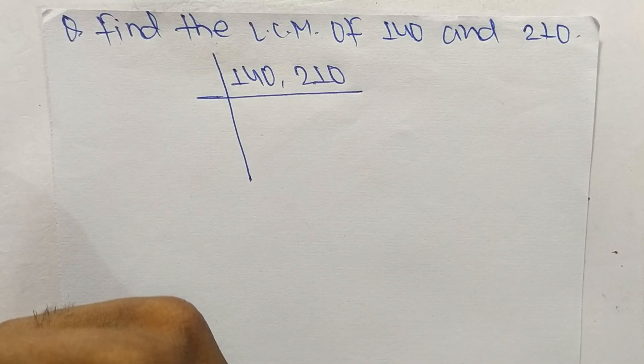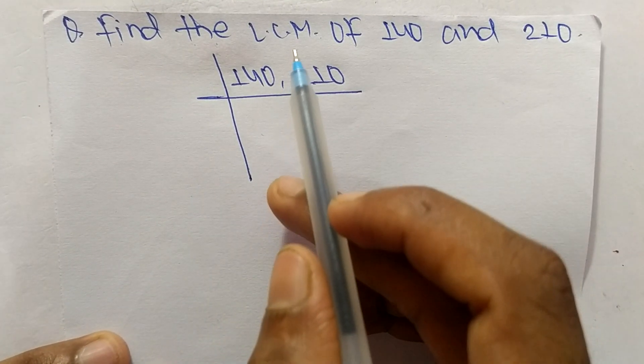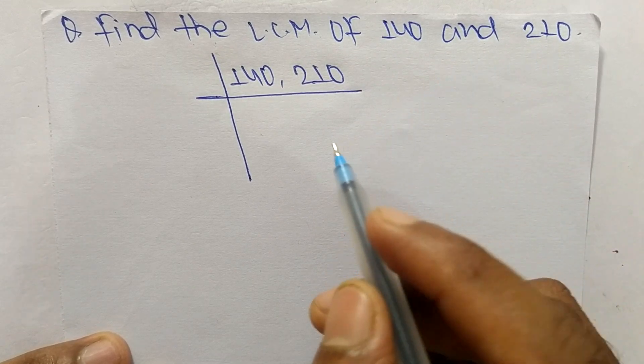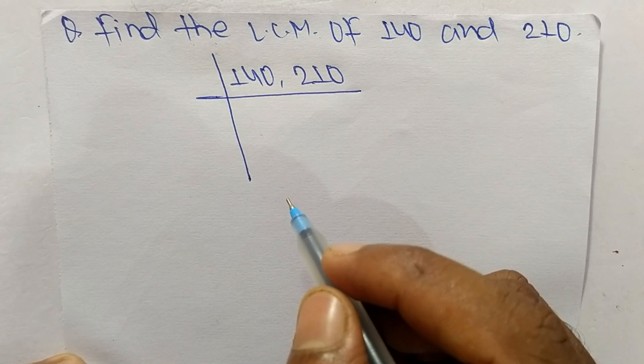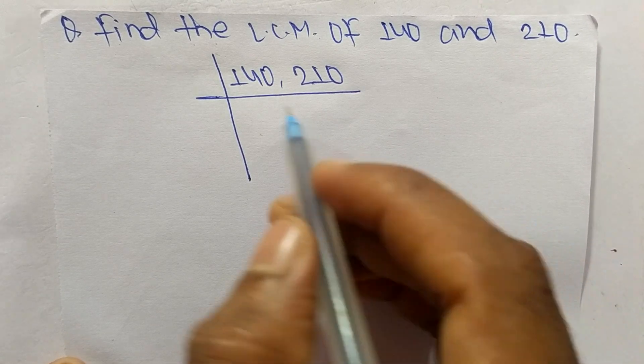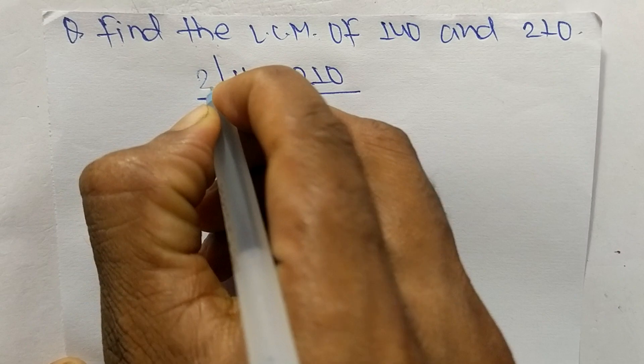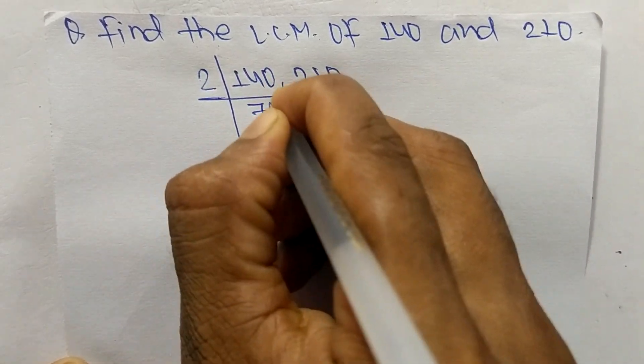So today in this video we shall learn to find the LCM of 140 and 210. First, we choose the lowest number that can exactly divide 140 and 210. The number is 2, so 2 times 70